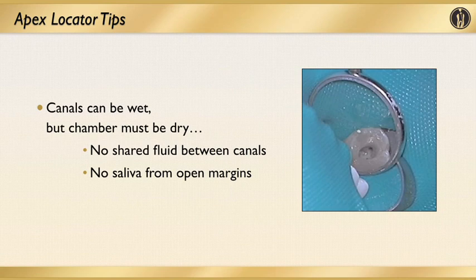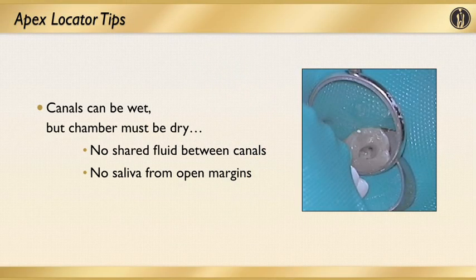As you're using the apex locator, you want the chamber to be dry. You don't want wet fluids inside that chamber because you won't get a consistent reading. No shared fluid between the canals, no saliva leaking in — you need a dry chamber. Now, when I say the chamber must be dry, it should be dry of fluids. You can have lubricants in there such as ProLube or Glide File Prep — those actually help the conduction of the file with the apex locator. So you can have lubricant in the chamber but don't have it wet. If you put your file in and still don't get a proper reading, take a paper point, put it into the canal, dry the top portion, then reinsert your file and usually you'll get a consistent reading. Canals can be wet, but the chamber must be dry of fluids.